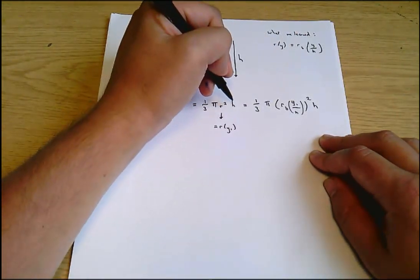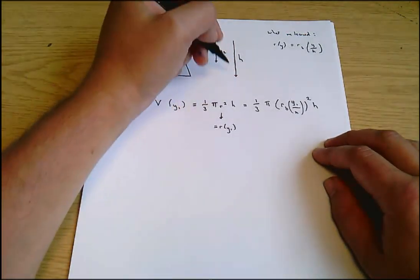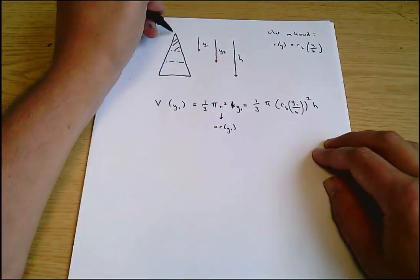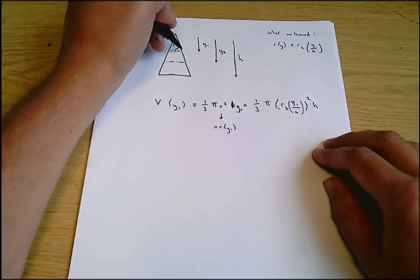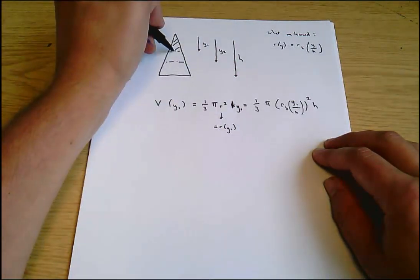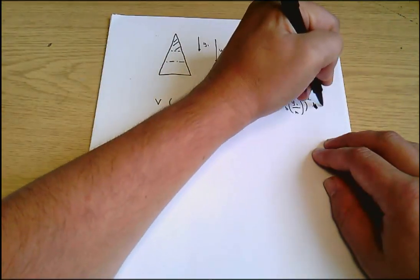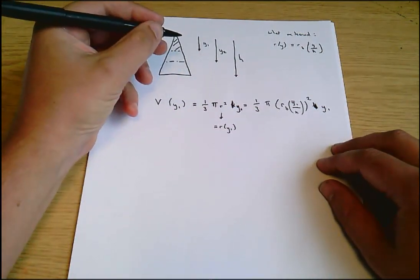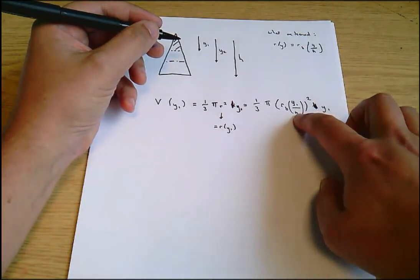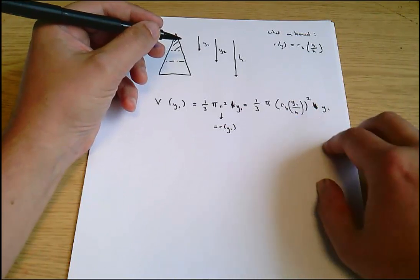And also confusingly, sorry, this H isn't the height, the total height anymore. That should really say Y1, right? If we're looking for the volume of this cone here, it's one third pi R at Y1, this radius squared times the height of that cone, which is Y1. So this should be Y1. So we've got something there. It's going to involve Y1 cubed divided by H squared. It looks a little bit messy, but we'll come back and look at that.